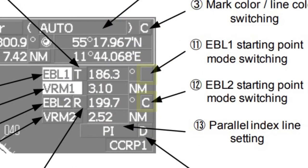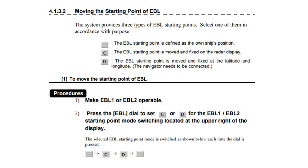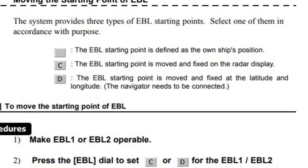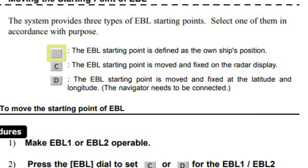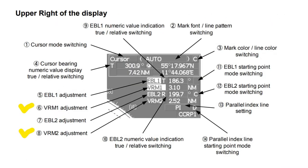The starting point of the currently operating EBL can be switched from the center of the radar display to any offset position. The system provides three types of EBL starting points: empty — the EBL starting point is defined as the own ship's position; C — the EBL starting point is moved and fixed on the radar display; D — the EBL starting point is moved and fixed at the latitude and longitude.